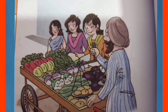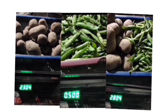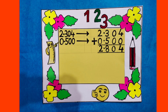We use addition and subtraction of decimal numbers several times in our daily life. Let's take an example. Sukman and Arpan's mother bought some vegetables. She bought some potatoes which weighed 2.304 kilograms. She also bought some peas which weighed 0.500 kilogram. When both the vegetables were weighed together, their weight was 2.804 kilograms. So 2.304 plus 0.500 equals 2.804, and it can be represented in mathematical form.